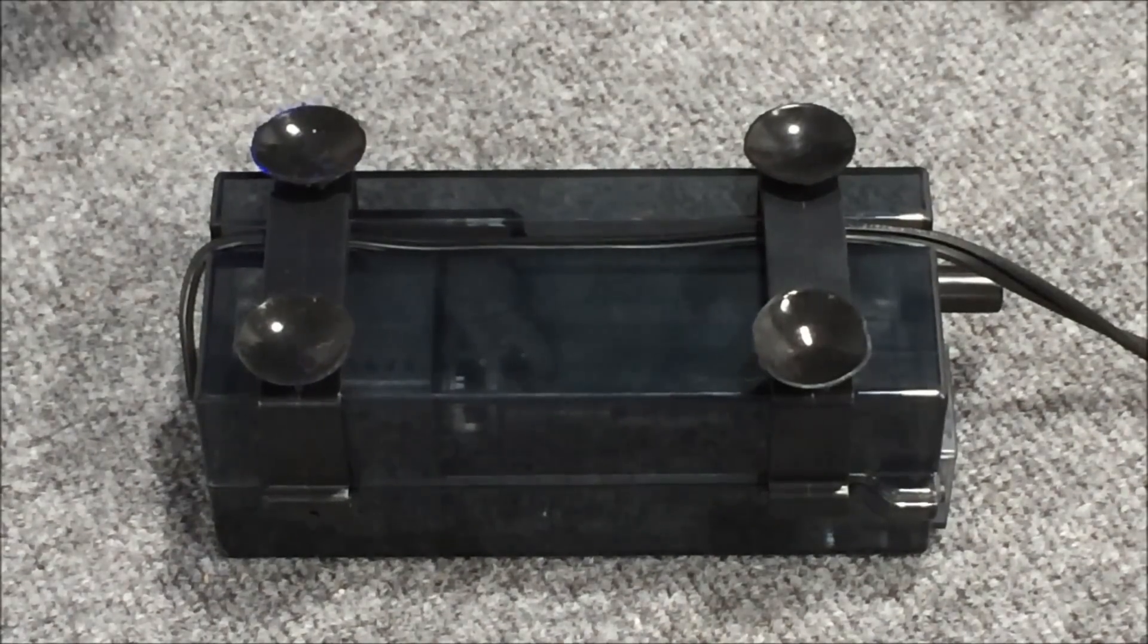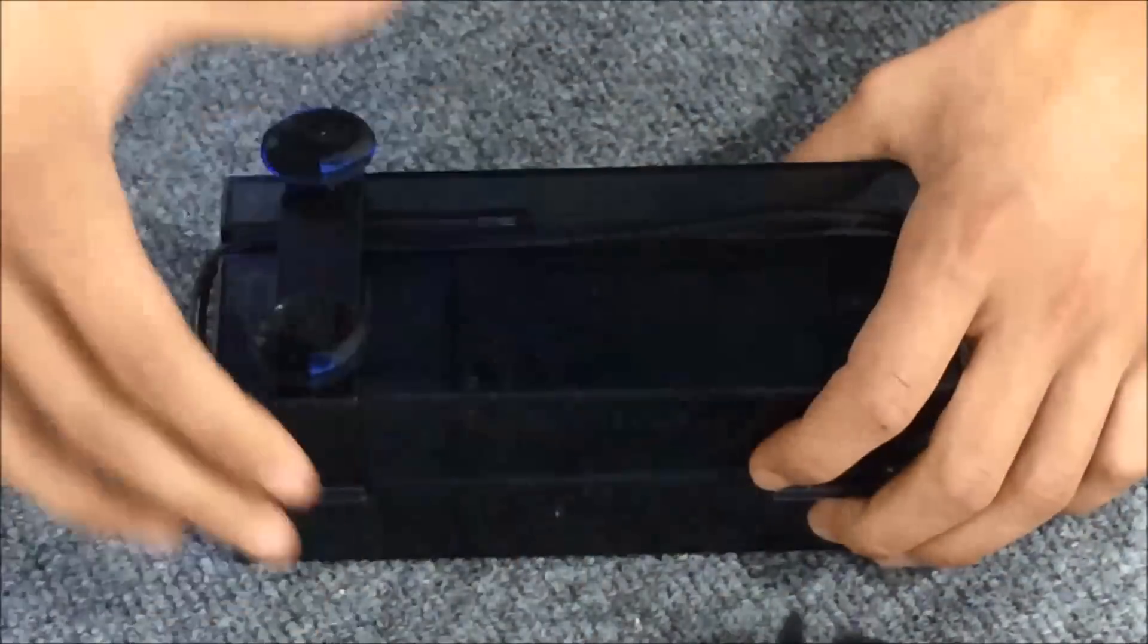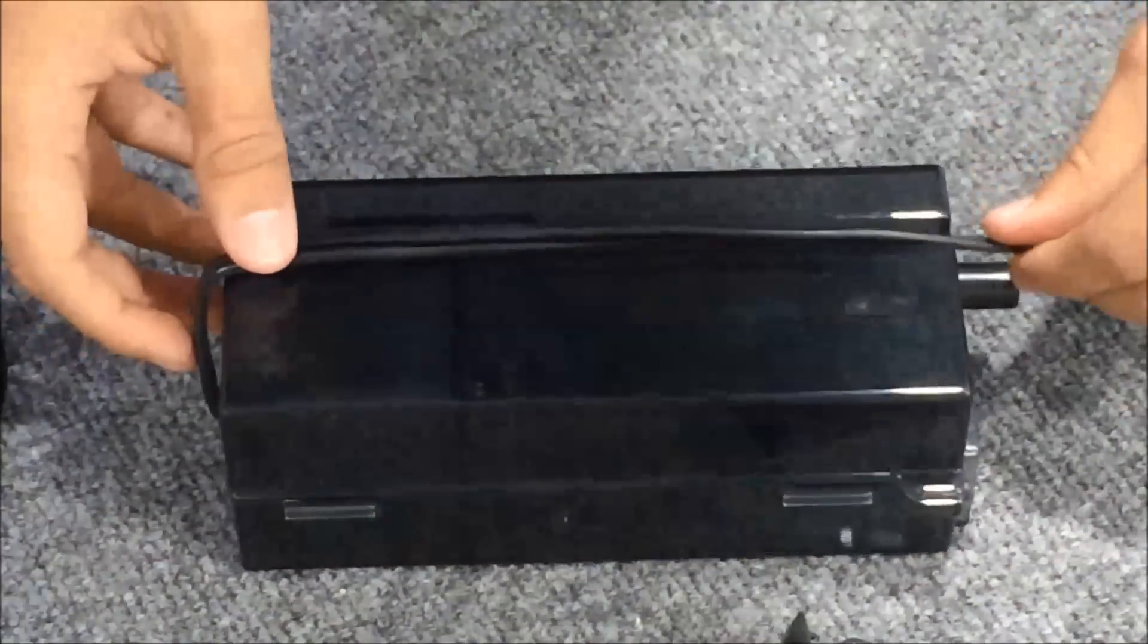Let's get a closer look at the skimmer and we'll go ahead and open this up. So to do that, you'll slide these brackets down. And then you've got this channel here that allows you to route the power cord.